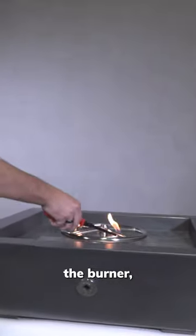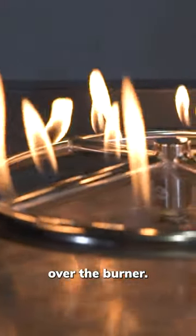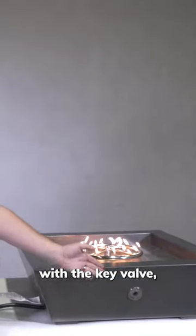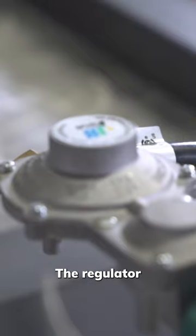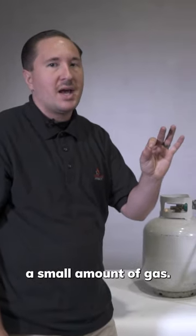As I light the burner, we can see these small, low flames over the burner. The reason behind this is that the regulator needs to communicate with the key valve. Because there's essentially no valve in this system now, the regulator will put the propane tank into a safety or limp mode, only allowing a small amount of gas.